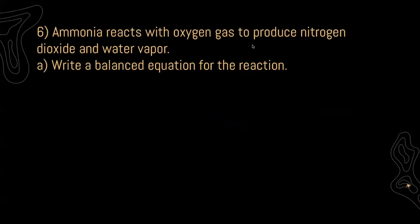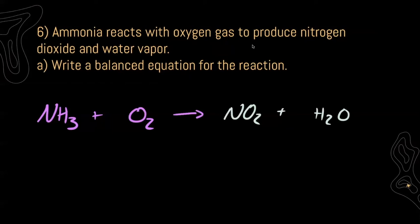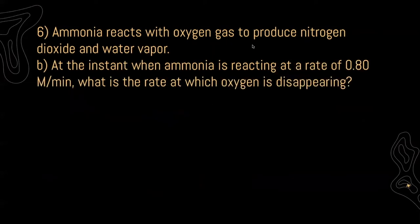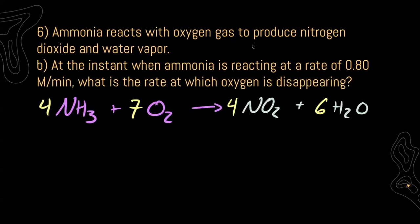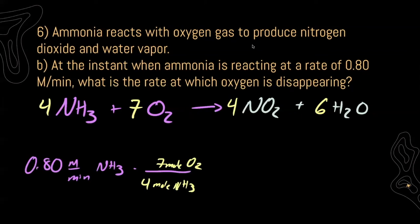For six, ammonia reacts with oxygen gas to produce nitrogen dioxide and water vapor. Part A: write a balanced chemical equation. Ammonia reacts with O₂ — oxygen is diatomic — to produce nitrogen dioxide and water vapor. Now balance it with coefficients. For Part B, at the instant when ammonia is reacting at a rate of 0.80 molar per minute, I need to find the rate at which oxygen is disappearing. Using mole ratios from the balanced chemical equation, I convert the ammonia rate to get an oxygen rate of 1.4 molar per minute.